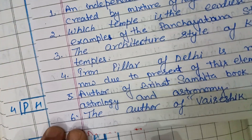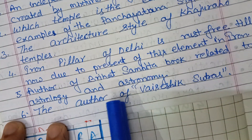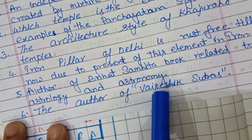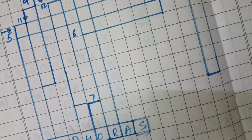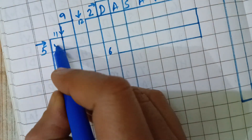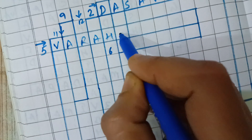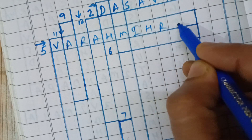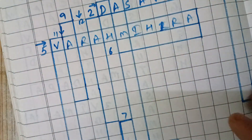Fifth question: who is the author of Brihat Samhita, a book related to astrology and astronomy? The answer is Varah Mihir — V-A-R-A-H M-I-H-I-R. This is written as fifth across.